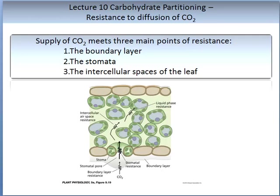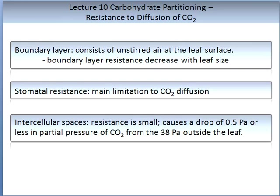There are three main points of resistance to the supply of CO2. The first is the boundary layer, the second the stomata, and the third the intracellular spaces in the leaf. The boundary layer results in unstirred air around the leaf surface, known as boundary layer resistance, and it decreases with leaf size. Stomatal resistance is the main limitation to carbon dioxide diffusion, while the resistance incurred in the intracellular spaces is small.